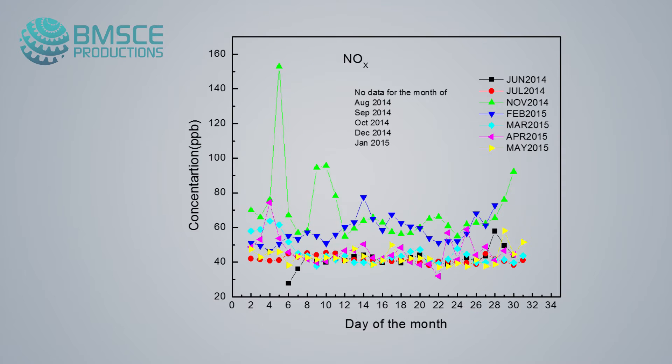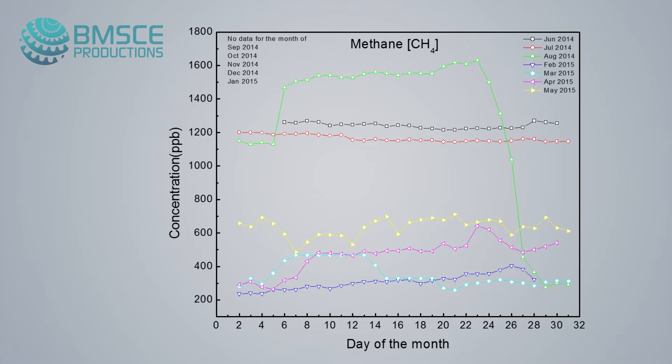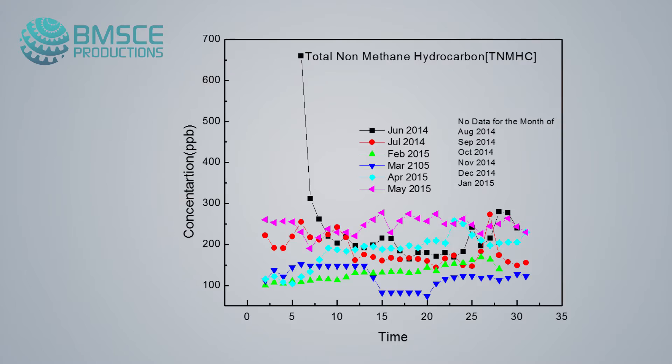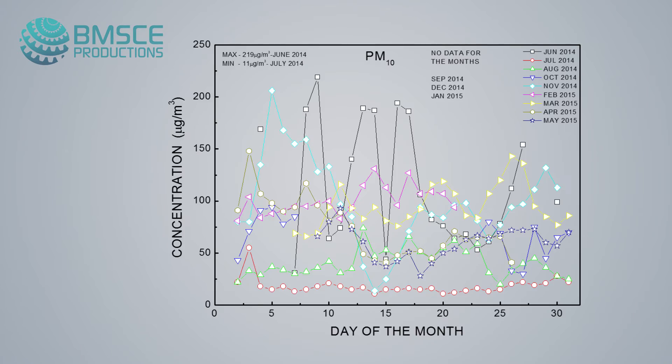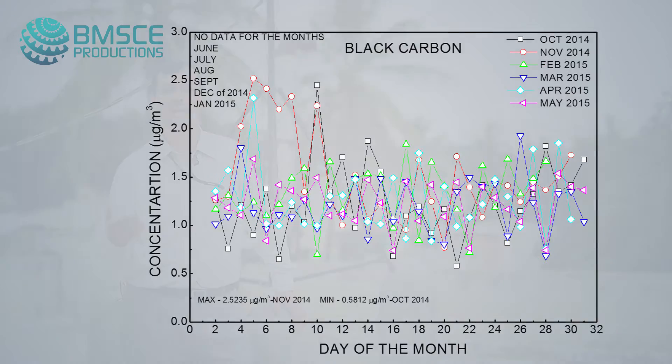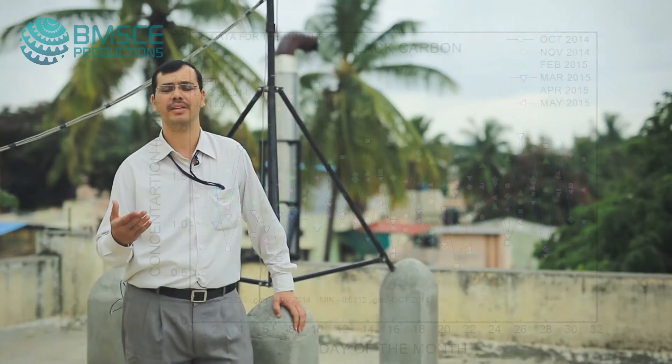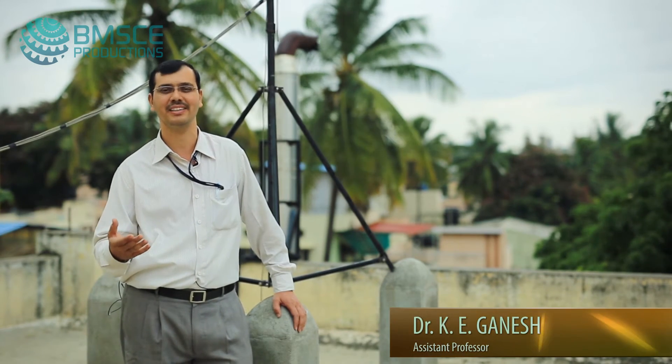Additional pollutants measured include methane, non-methyl hydrocarbon, total suspended particulate matter, and black carbon, along with weather parameters. The entire data is acquired online and maintained by Indian Institute of Tropical Meteorology, Pune.